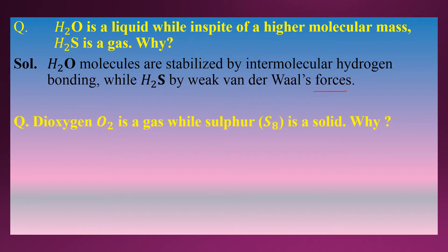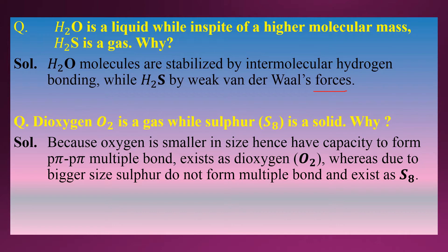The next question is: dioxygen O2 is a gas while sulfur S8 is a solid. Why? The answer is that oxygen is smaller in size and hence has the capacity to form pπ–pπ multiple bonds, so it exists as O2. When two oxygen atoms combine, they form a double bond between them. Due to the larger size of sulfur, it does not form multiple bonds and instead exists in the S8 form, which is solid.